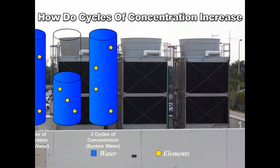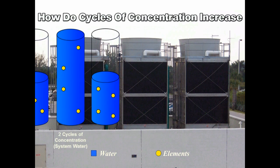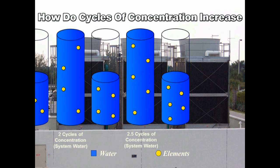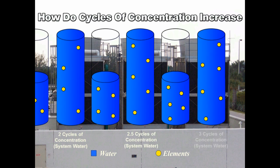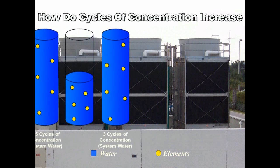As this process repeats, system cycles will continue to increase until they are controlled through bleed-off or they reach the concentration limit of the cooling tower.